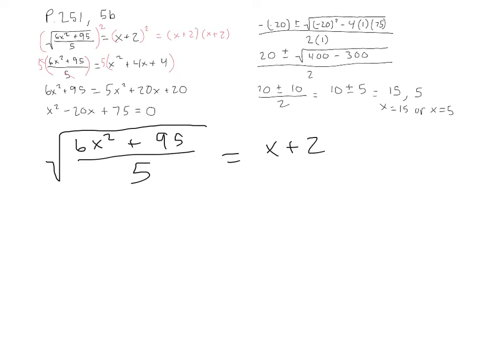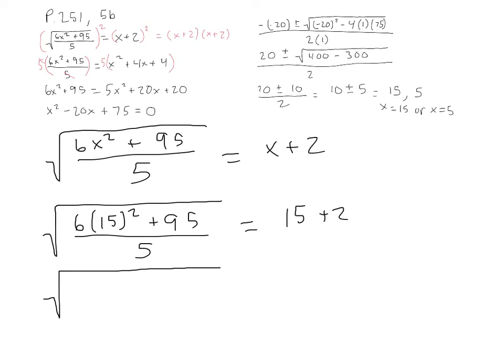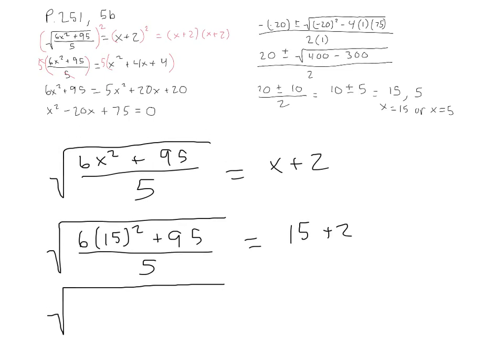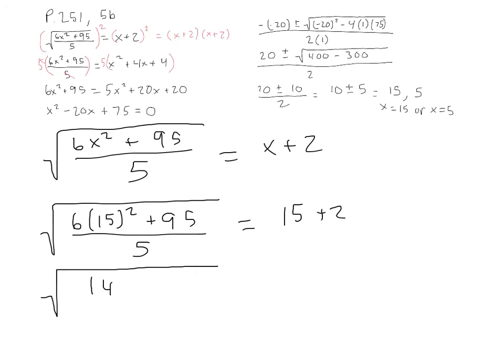15 squared is 225, times 6 is 1350, and plus 95 is 1445. 1445 divided by 5 is 289, and the square root of 289 equals 17.